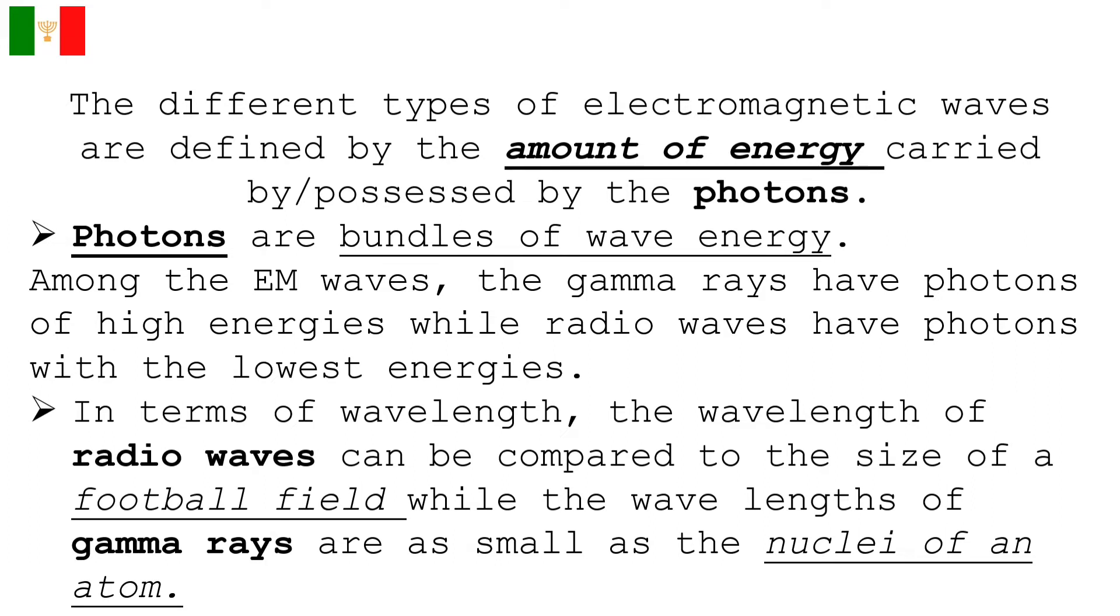The different types of electromagnetic waves are defined by the amount of energy carried by or possessed by the photons. Photons are the bundles of wave energy. From among the EM waves, gamma rays carry photons of high energies, while radio waves own photons with the lowest energies.